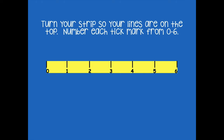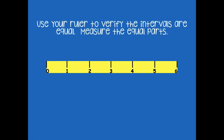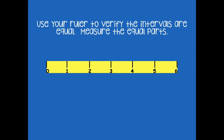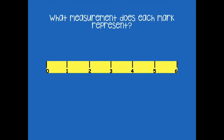Use your ruler to verify the intervals are equal — measure the equal parts. Pause the video, grab your ruler, and measure to make sure that from zero to one is the same as one to two, the same as two to three, and all the way to five to six. Hopefully your measurements are all equal. What measurement does each mark represent? It's one inch — from zero to one is one inch, from one to two is one inch, and so on until five to six. That's also one inch.